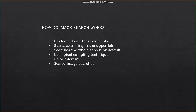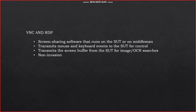How do image search functionalities work in Eggplant? UI elements and text elements are searched starting from the upper left, searching the whole screen by default. It uses pixel sampling techniques and is sample-tolerant, with scale image searches supported. VNC and RDP are screen sharing software that runs on the SUT or on a middleman. Many screen sharing applications are available across operating systems but not all allow mouse and keyboard events. In Eggplant, mouse and keyboard events are transmitted to the SUT for control, and the screen buffer is transmitted from the SUT for image and OCR searches.